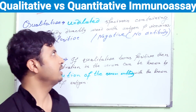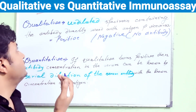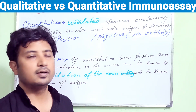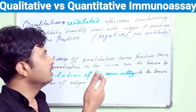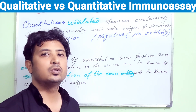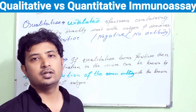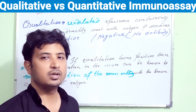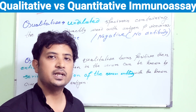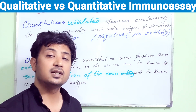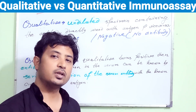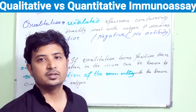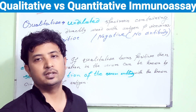You can take antigen instead of antibody in the patient's serum, and use a known concentration of antibody — vice versa — to detect the presence of either the antigen or the antibody in the patient's serum. That is the qualitative test.